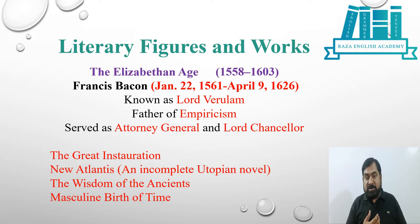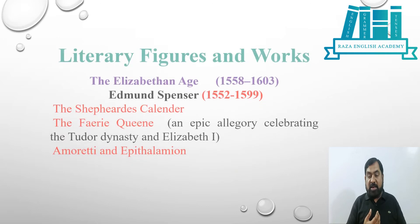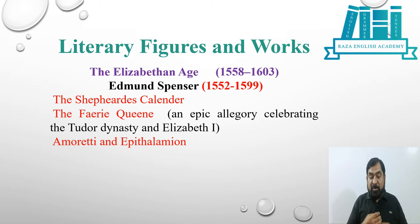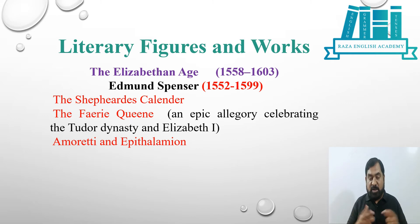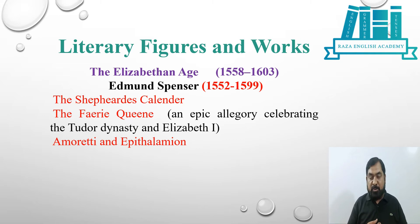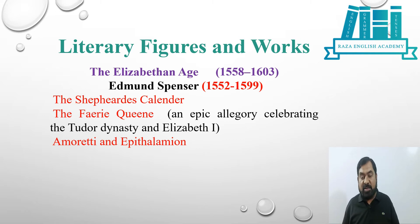The next important writer is Sir Edmund Spenser. He was born in 1552 and died in 1599, and he also belongs to the Elizabethan Age. His important works include The Shepherd's Calendar and The Faerie Queene — an epic allegory that celebrates the Tudor dynasty and Queen Elizabeth I. Another important work is Amoretti and Epithalamion.